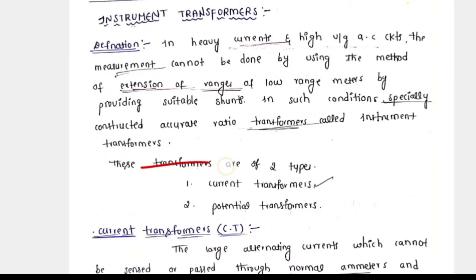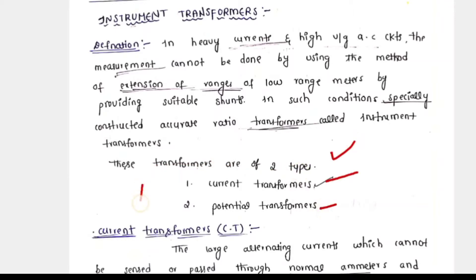Why are we using current transformer and potential transformer? There are two types of transformers: one is the current transformer and the other is the potential transformer. The current transformer is used in conjunction with the ammeter, whereas the potential transformer is used in conjunction with the voltmeter.